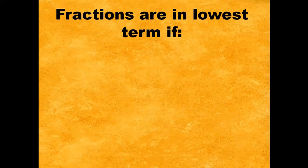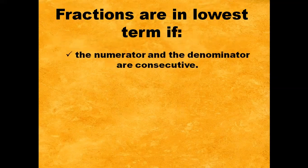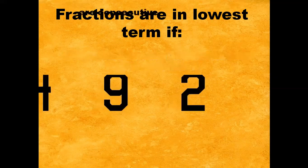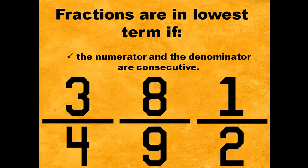Another condition: fractions are in lowest term if the numerator and the denominator are consecutive. For example, three-fourths, eight-ninths, one-half. Three and four are consecutive. Eight and nine are also consecutive. One and two are consecutive. So three-fourths, eight-ninths, and one-half are fractions that are in lowest term.